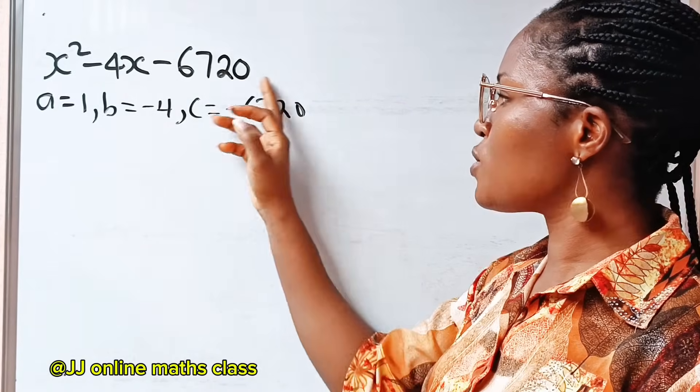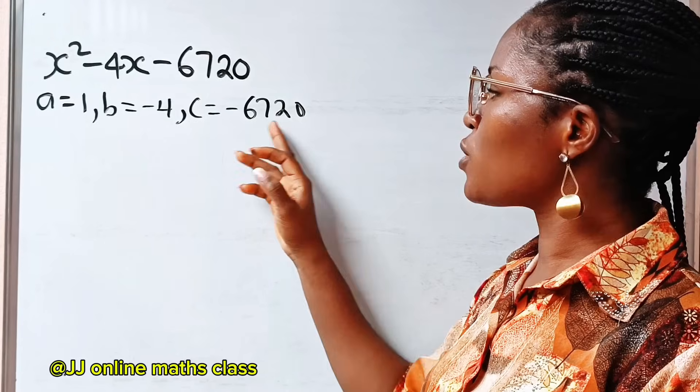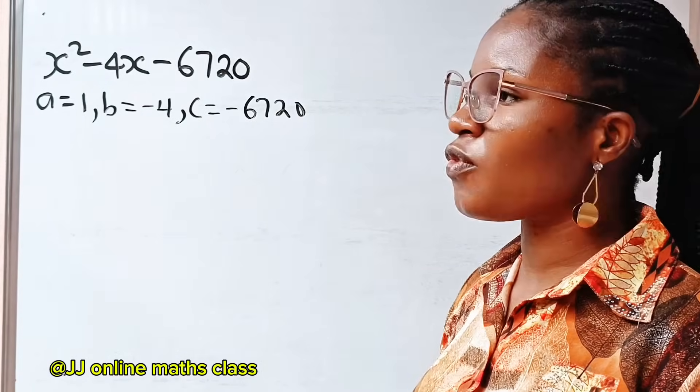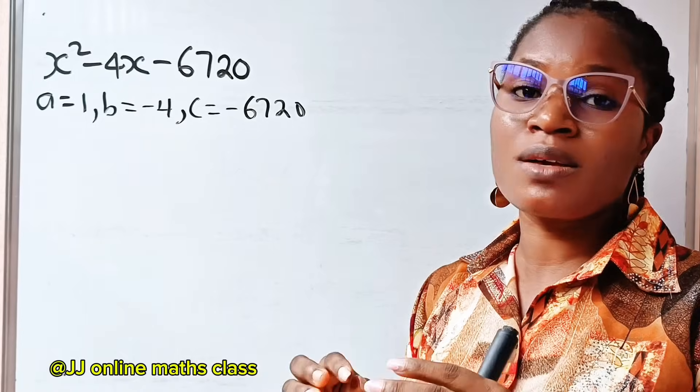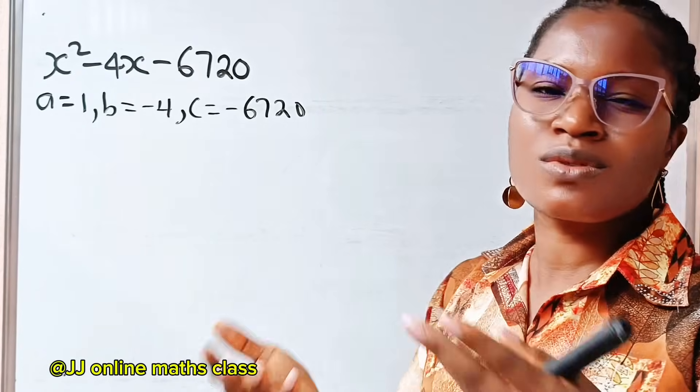Normally, we are going to focus on this minus 6720, and we look for two factors of minus 6720 that when we add them together, we get minus 4. And that is going to take us a whole lot of time. And sometimes we might make mistakes because trying to fix the signs on the two factors you get will still take you time.